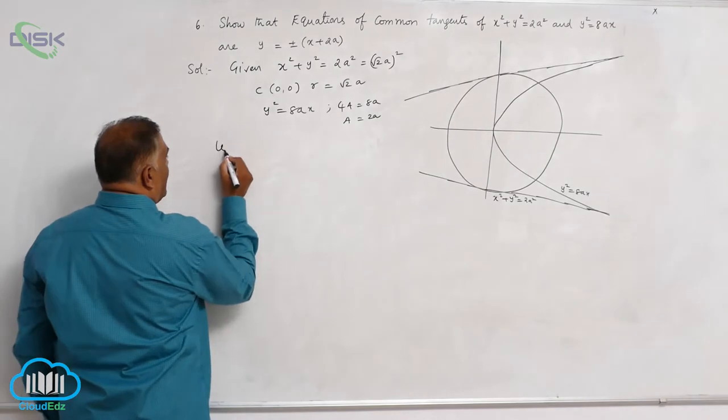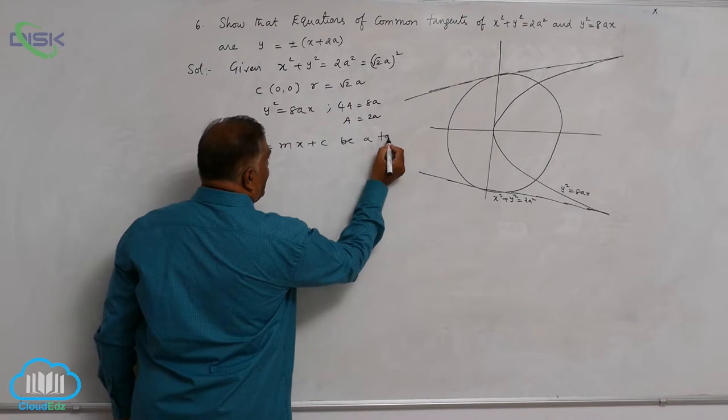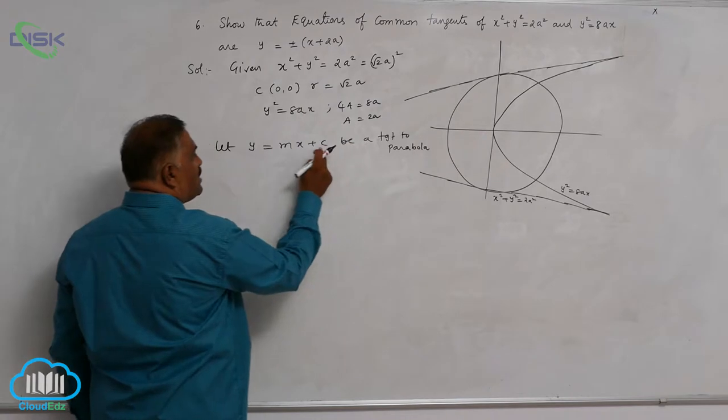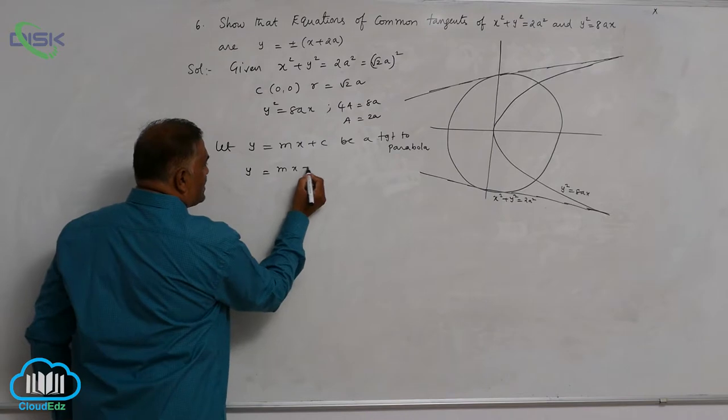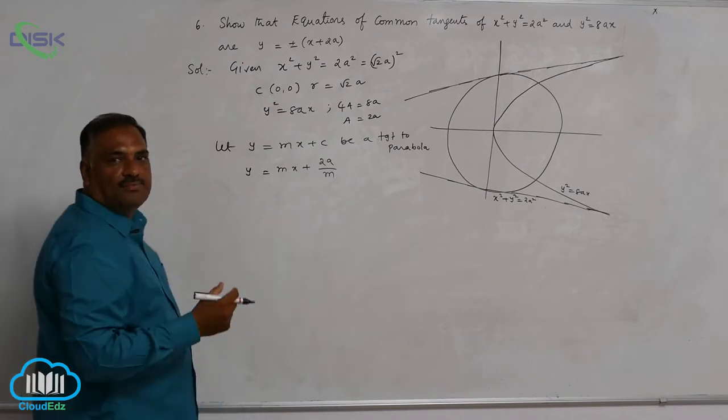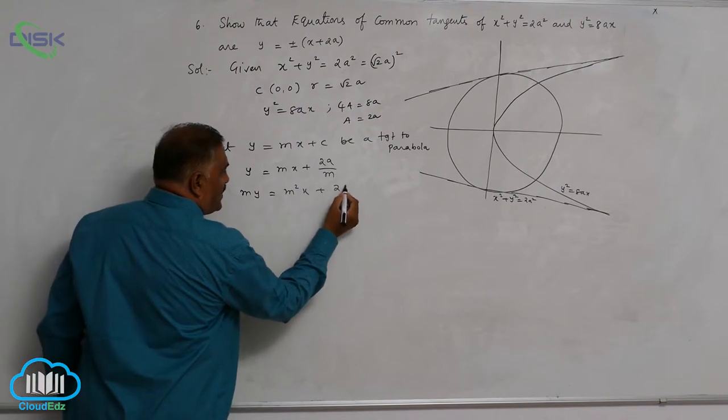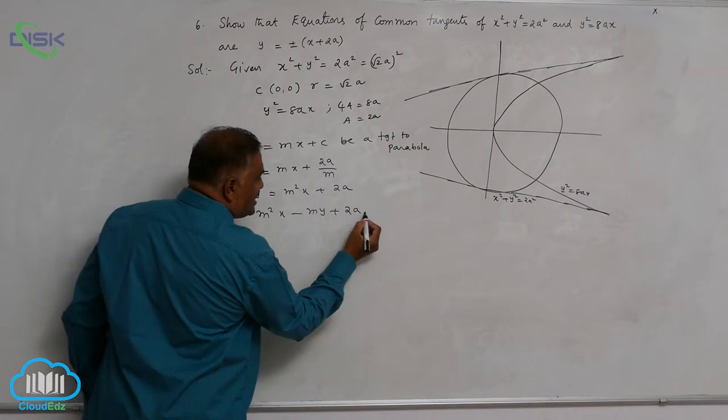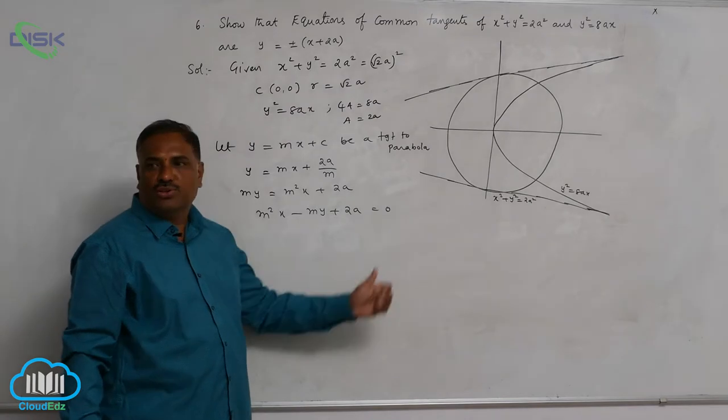So let y is equal to mx plus c be a tangent to parabola. So we know that c is equal to a by m condition. Now y is equal to mx plus, you see that a value is 2a, so 2a by m. Take lcm. So this is my is equal to m square x plus 2a. This comes m square x minus my plus 2a is equal to 0.